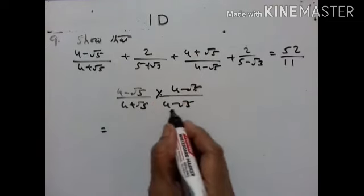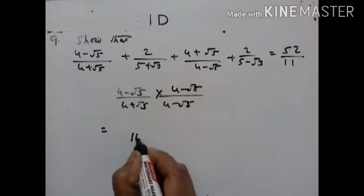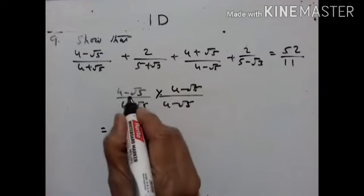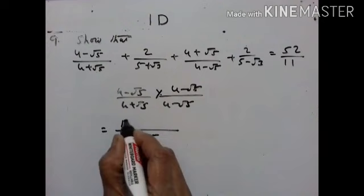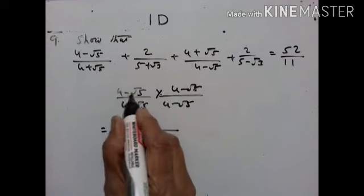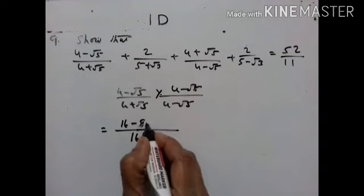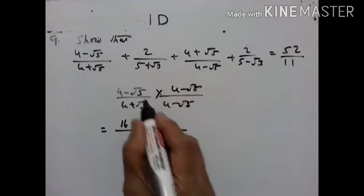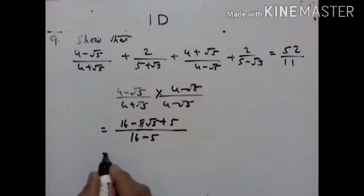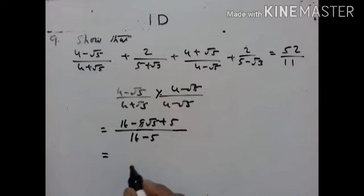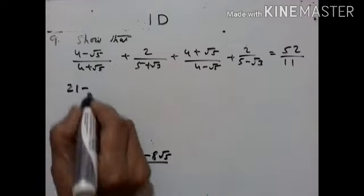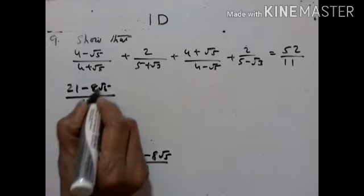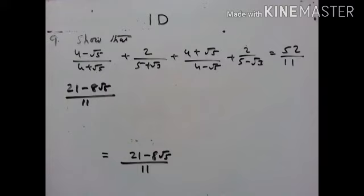Using the identity (a+b)(a−b) = a²−b² in the denominator, and (a−b)² for the numerator: (4 minus √5)² equals 16 minus 8√5 plus 5, which is 21 minus 8√5. The denominator 16 minus 5 equals 11. So the first term equals (21 minus 8√5) upon 11.